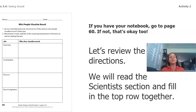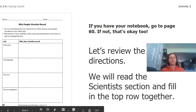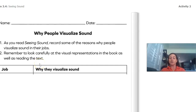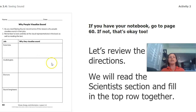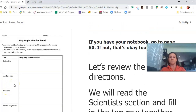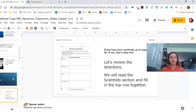If you don't have your notebook, that's fine too. The directions are simple: we're going to fill in a table as we read. As you read Seeing Sound, record some of the reasons why people visualize sound in their jobs. Remember to look carefully at the visual representations in the book as well as reading the text. You're going to write down why scientists, audiologists, doctors, and sound engineers each visualize sound. Now I'm going to go over to the book.